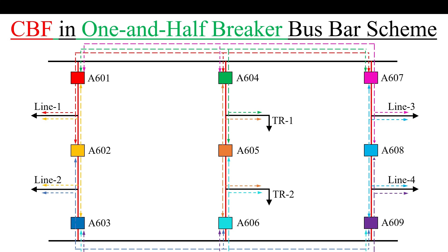I take a one-and-a-half breaker busbar scheme. In this scheme we have two buses, and in between three breakers. Between these three breakers we can connect two circuits, for example transmission lines or transformers. For simplicity, I make each breaker a different color so it can be easily differentiated.